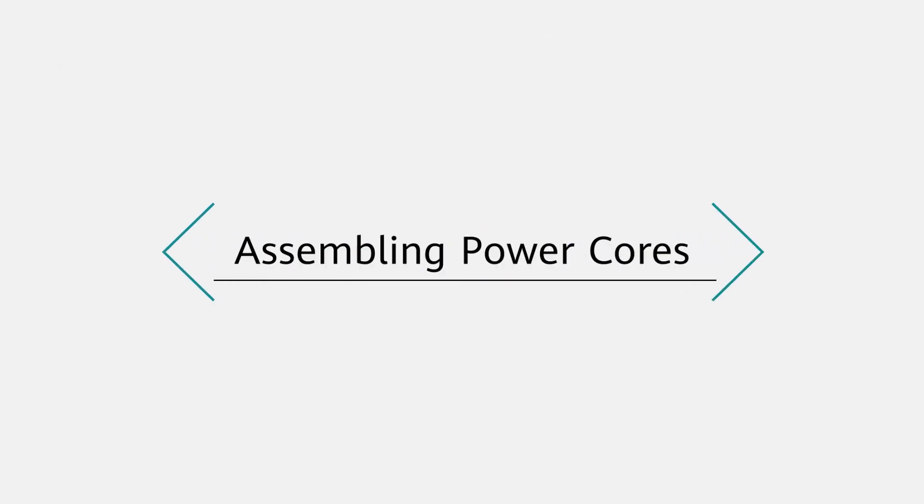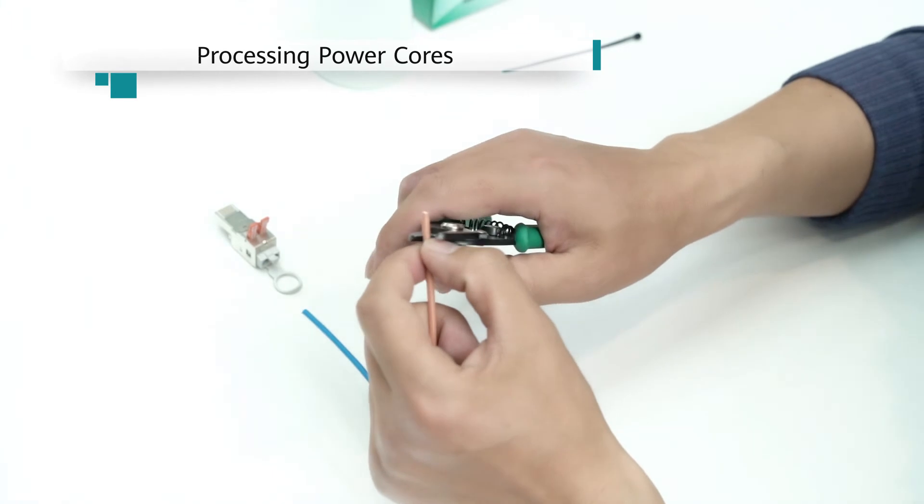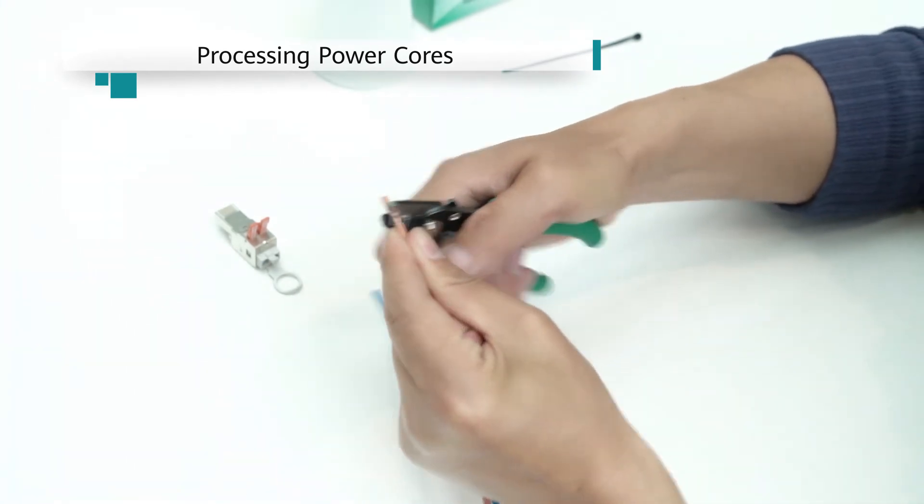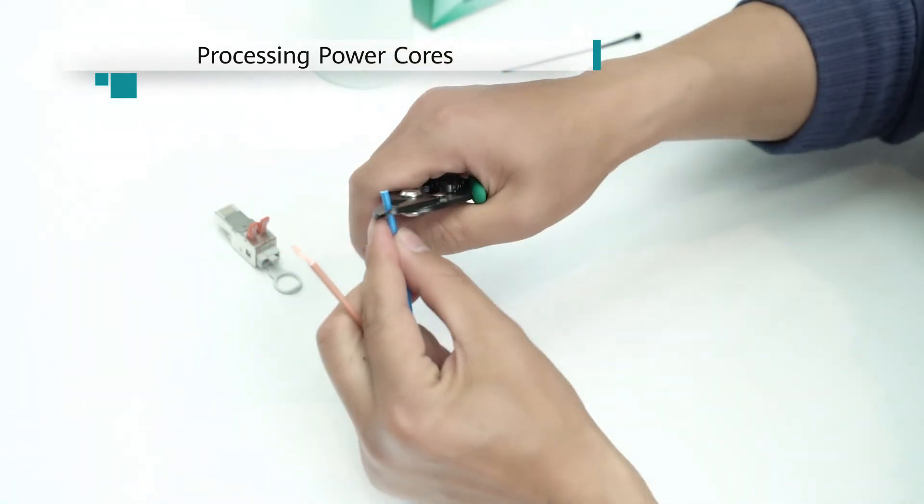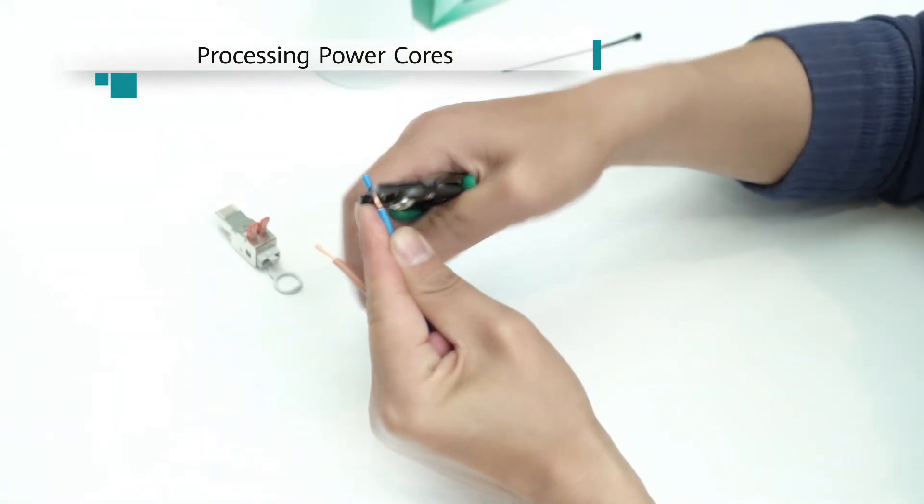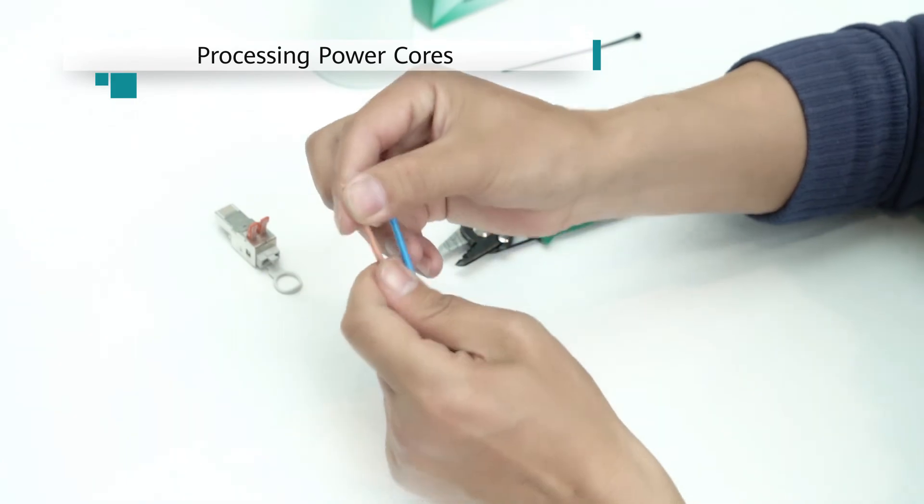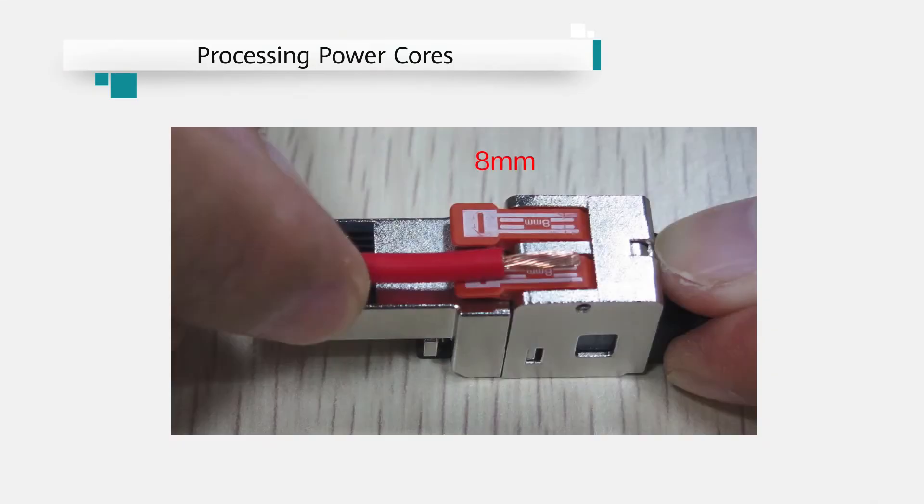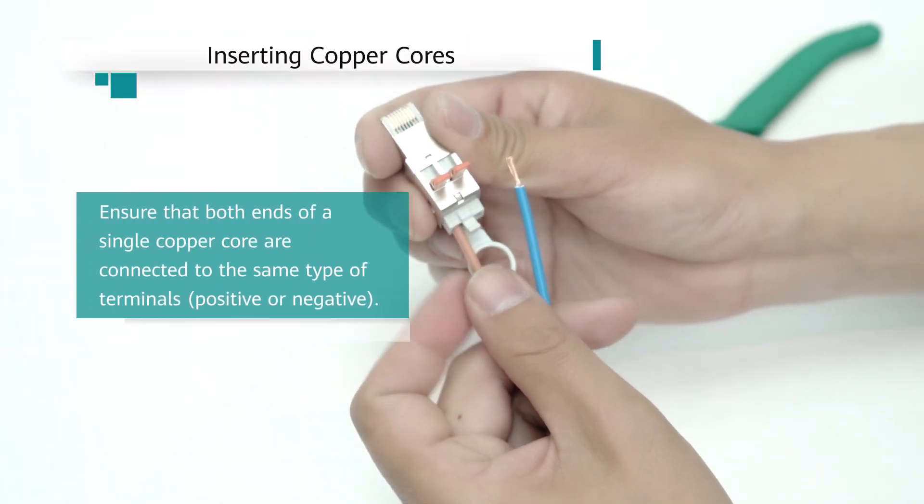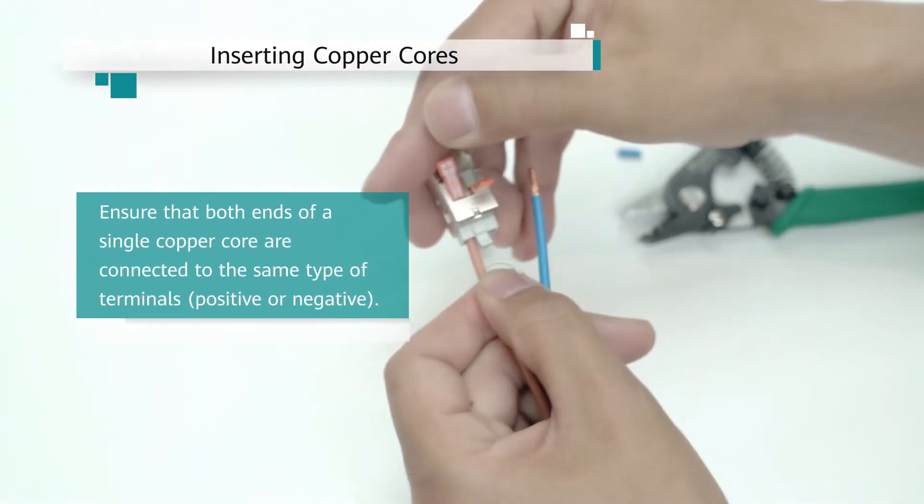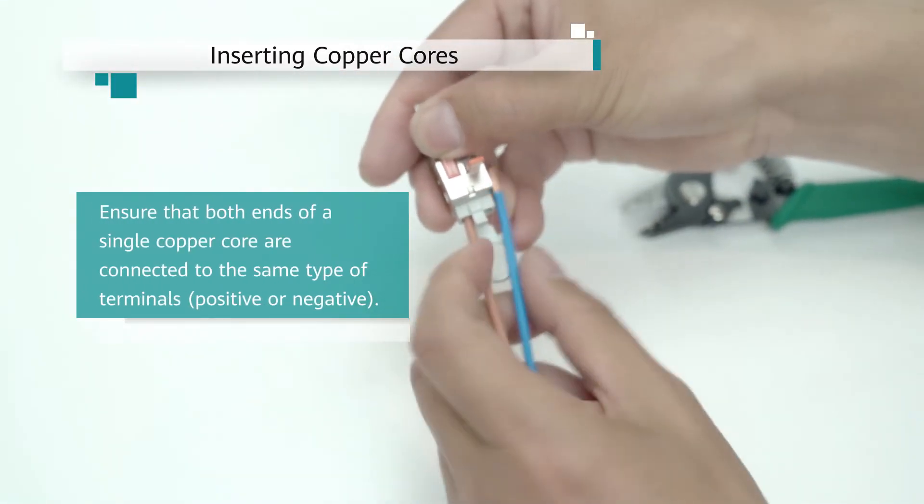Assembling power cores. Peel 8 mm of insulation coating off each power core. Fully raise the levers of a power connector as shown in the video. Insert the copper cores all the way into the cable inlets. Ensure that no copper conductors are bent or exposed.